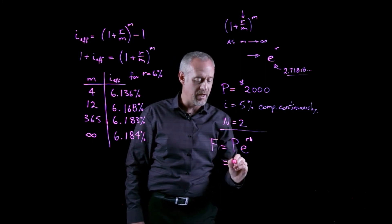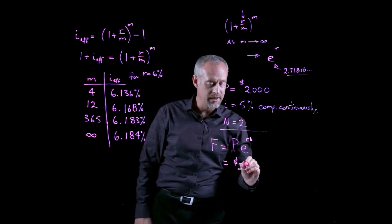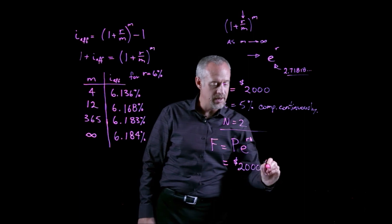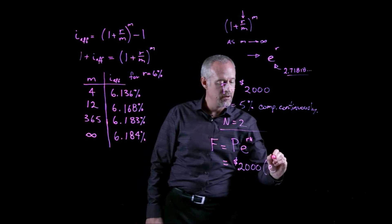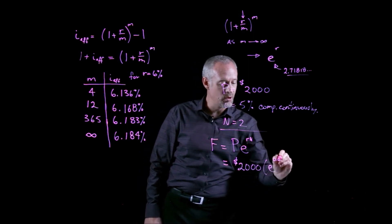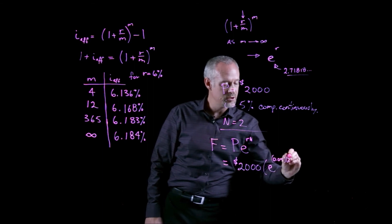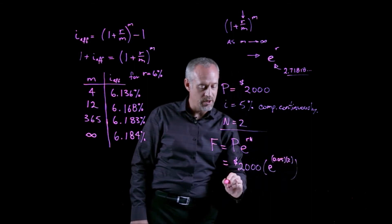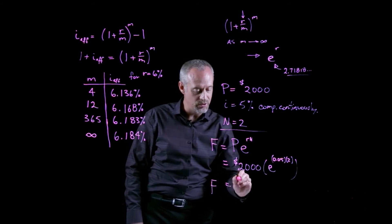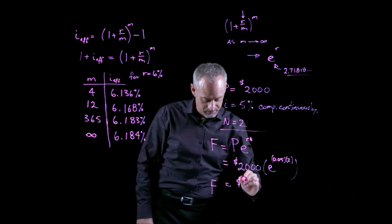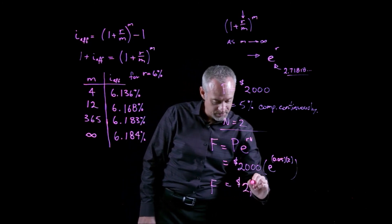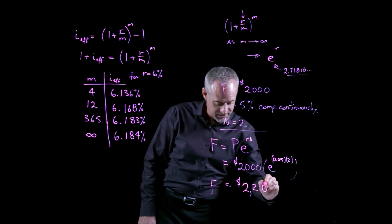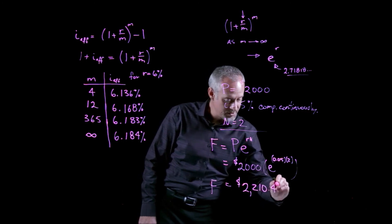So if I go ahead and plug these numbers in, I end up with 2,000 times e to the 0.05 times 2. And if I work out what that is, I end up with a future value of $2,210.40.